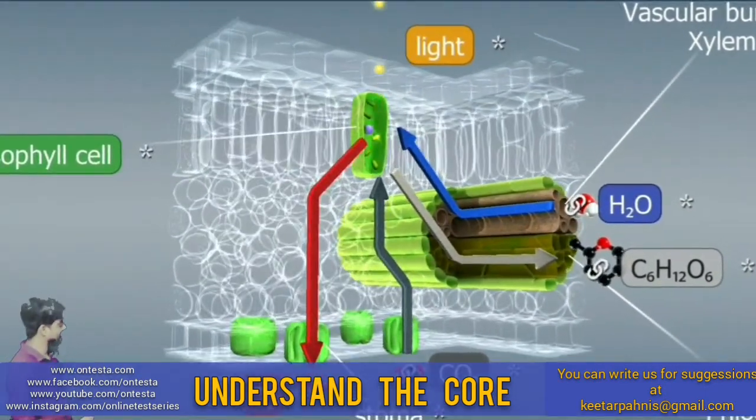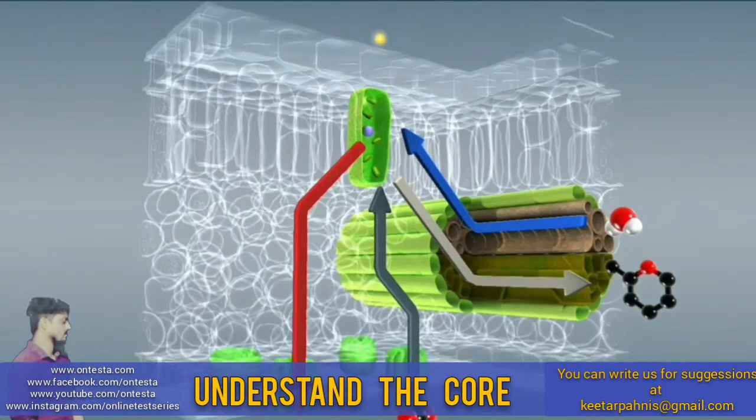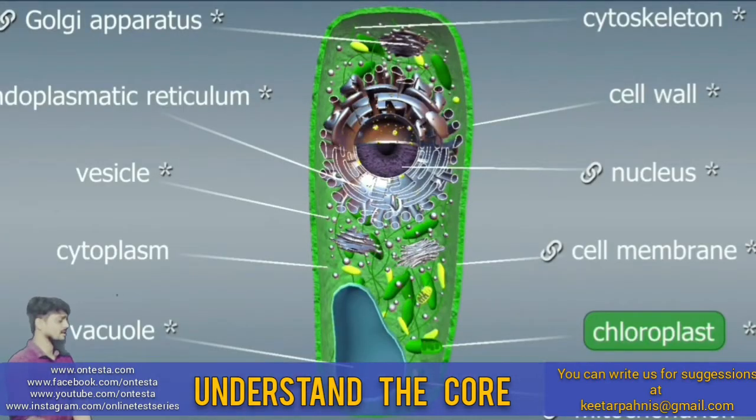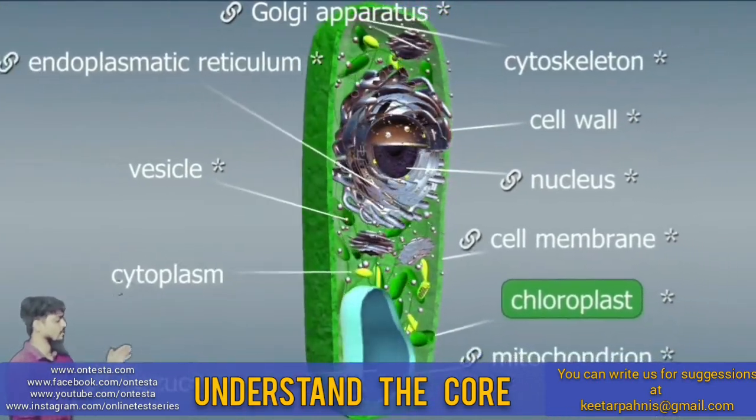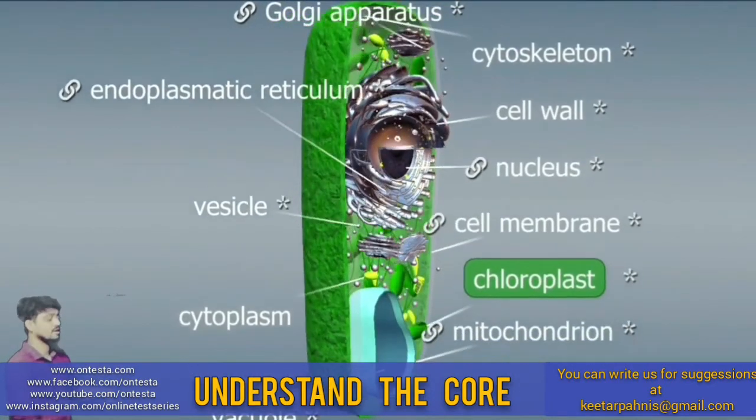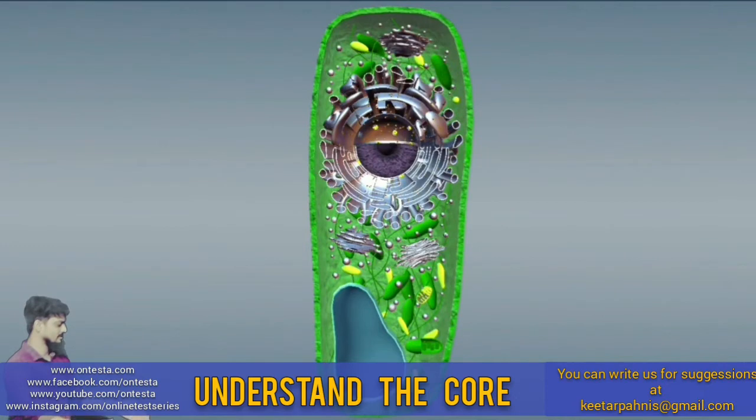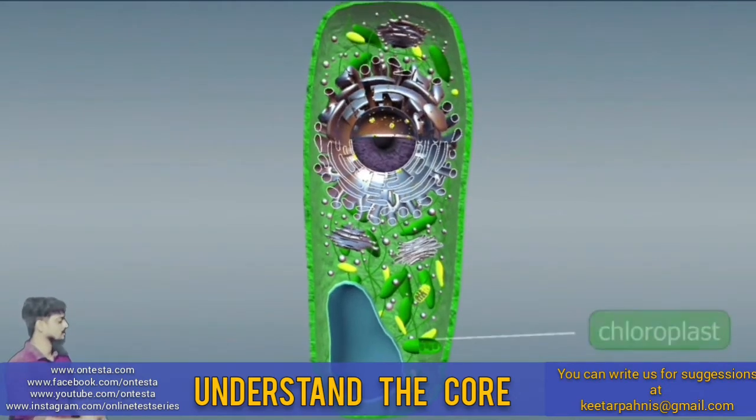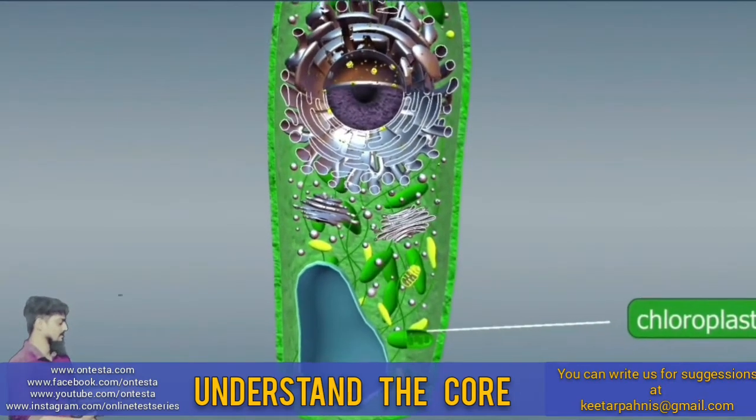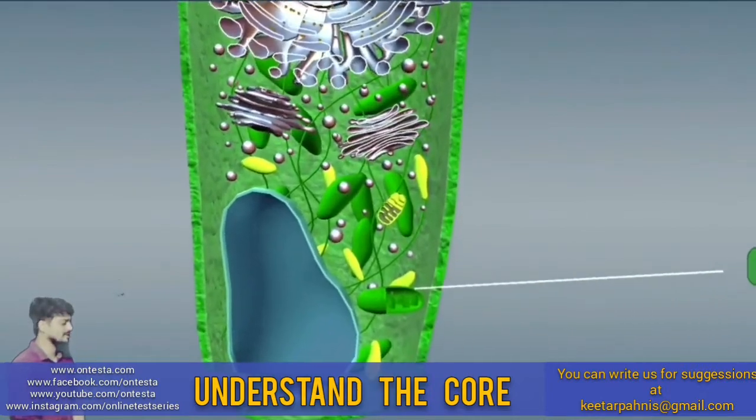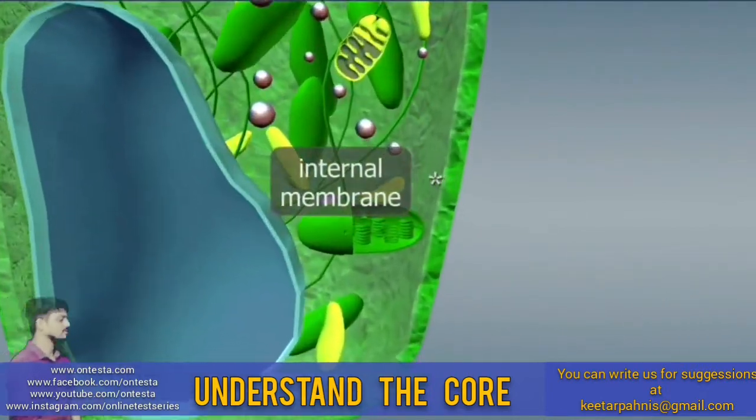Let's take a look into the cellular structure. As you can see, it has all the cellular components like Golgi complex, endoplasmic reticulum, vesicles, cytoplasm, cytoskeleton, cell wall, nucleus, cell membrane, etc. Our area of concern is the chloroplast. Let's get into the chloroplast to understand it more.